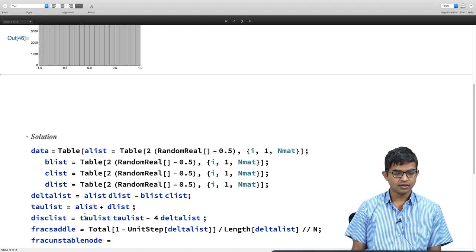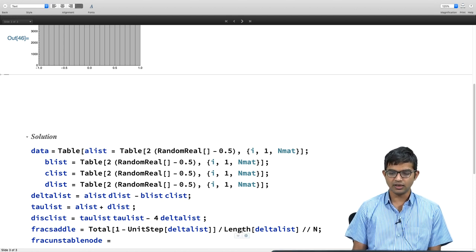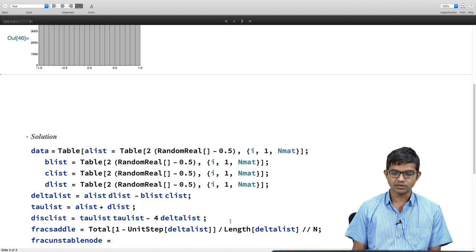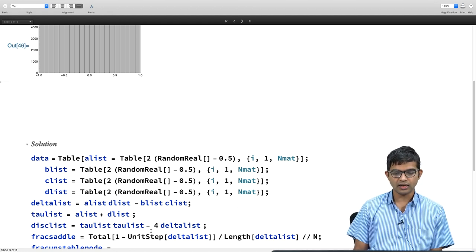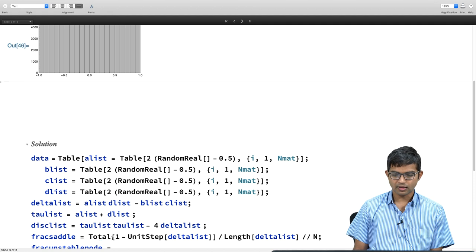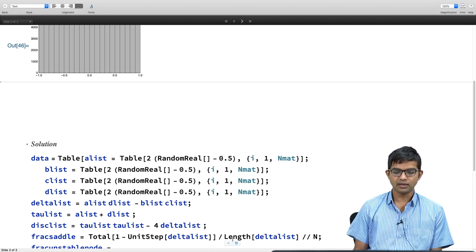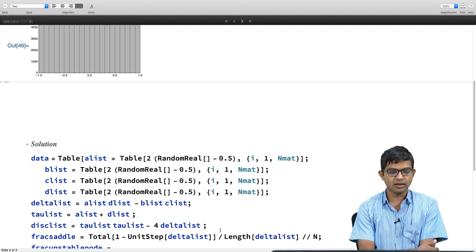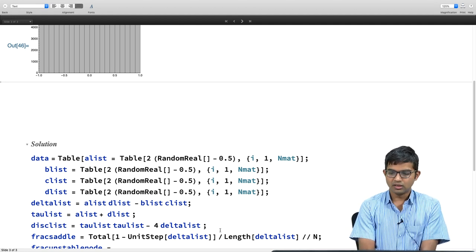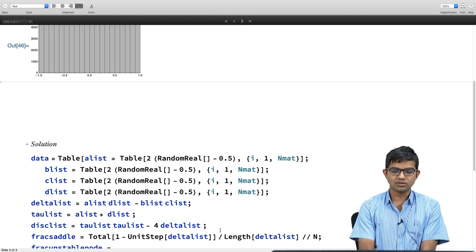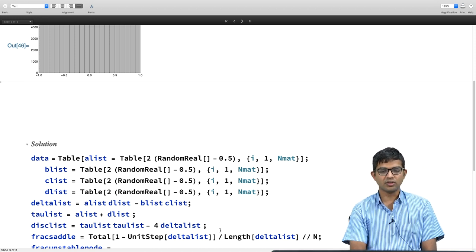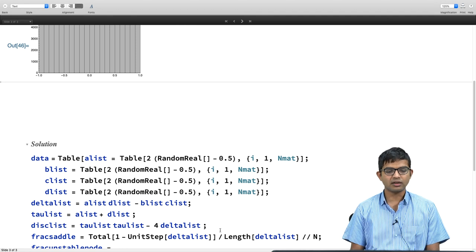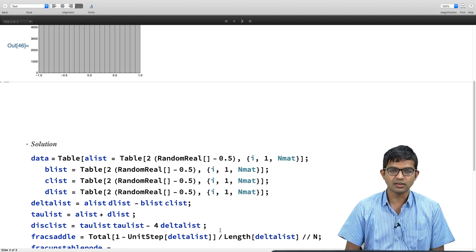And then, in order to get the fraction of saddle points, I am using a simple one line code to get this. All I do is find the length of this thing called delta list. It just tells you total number of elements. I have to find the sum and then divide it by the length. That is the total number of matrices. Delta list of, length of delta list is going to be basically the same as length of A list or length of B list. All of them are going to be the same. It is just nmat. I could have directly used this, but it is okay. I mean, length is a useful function for you all to be aware of.